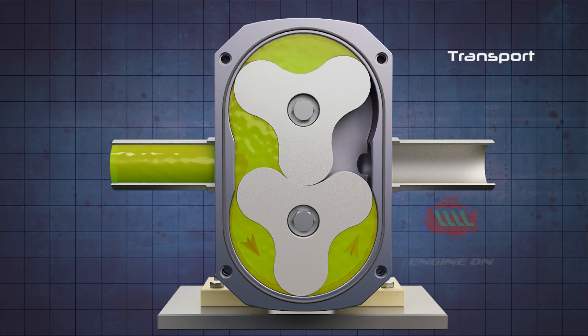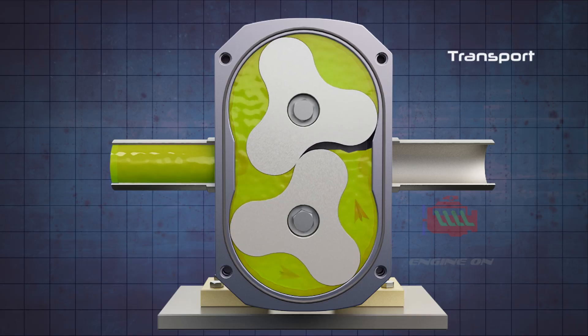Transport: The lobe's rotation traps a pocket of fluid and carries it along the inner wall of the pump casing to the discharge side.